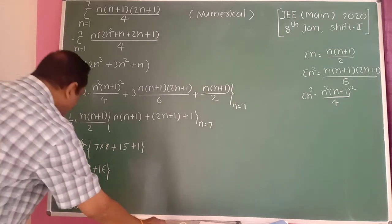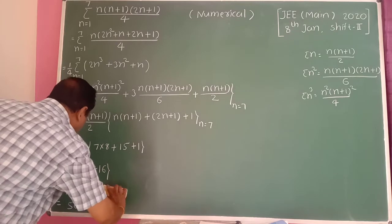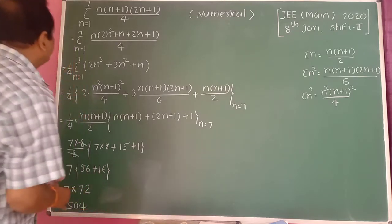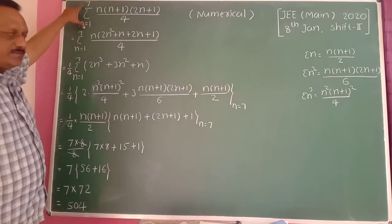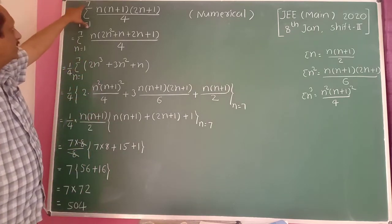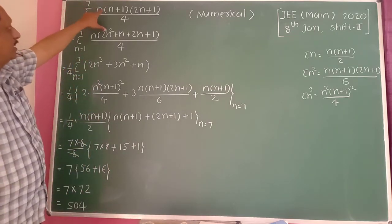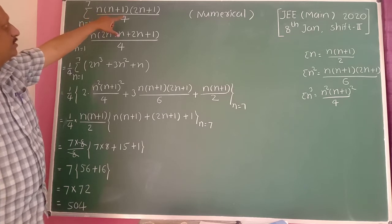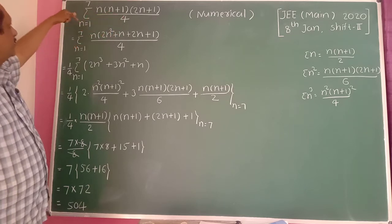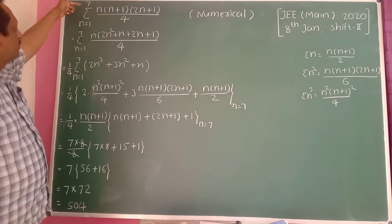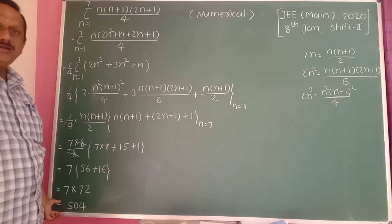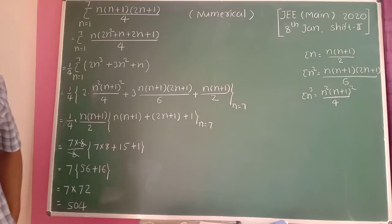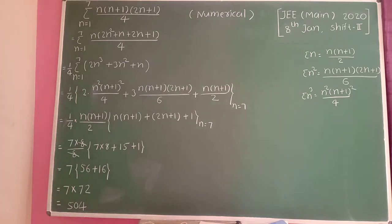So the answer is 5040. Therefore, the value of summation of n times n plus 1 times 2n plus 1 divided by 4, for n equal to 1 to 7, is 5040.